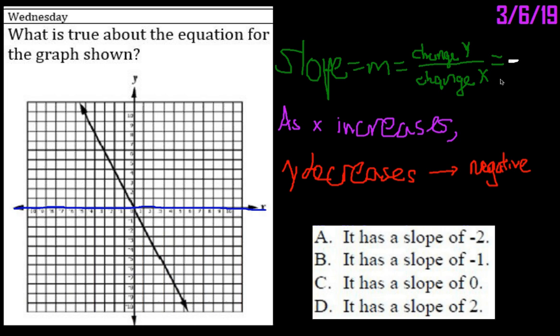And so if we have a negative slope, or if we look at our answer choices, already we can eliminate C and we can eliminate D, as those have a zero slope, which would just be a horizontal line, and a positive slope, which we do not have.